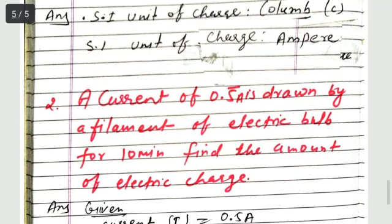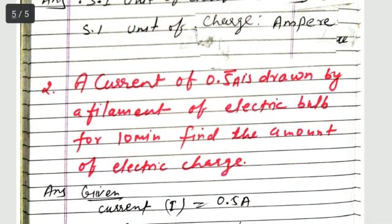Question number 2: A current of 0.5 A is drawn by the filament of an electric bulb for 10 minutes. Find the amount of electric charge.